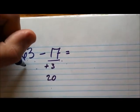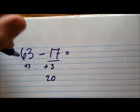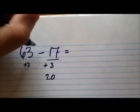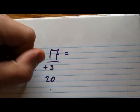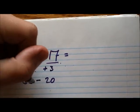Now I want to do the same thing to $63. So I'm going to add $3 to that one as well. So that the distance between these two numbers stays the same. So now this becomes $66 minus $20.